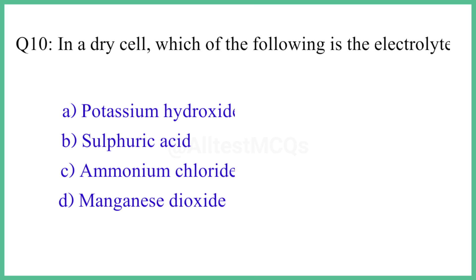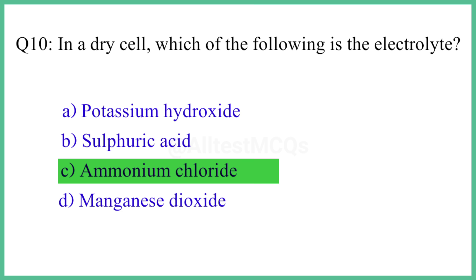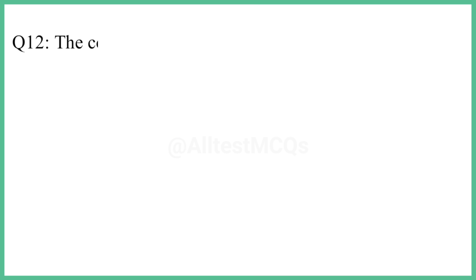Question number 10. In a dry cell, which of the following is the electrolyte? The right answer is option C: ammonium chloride.